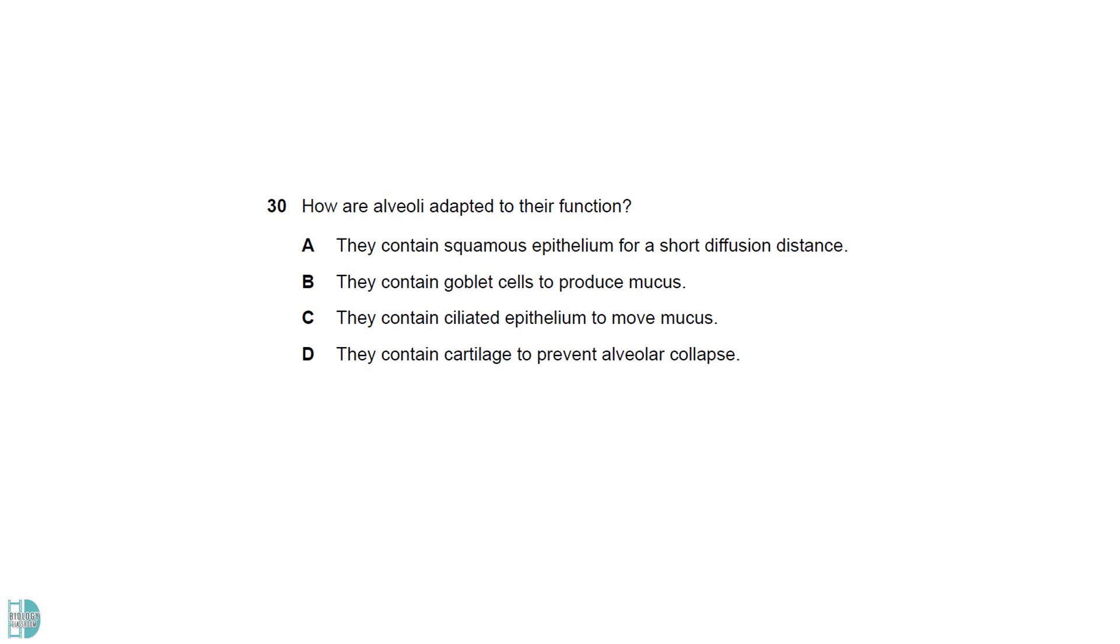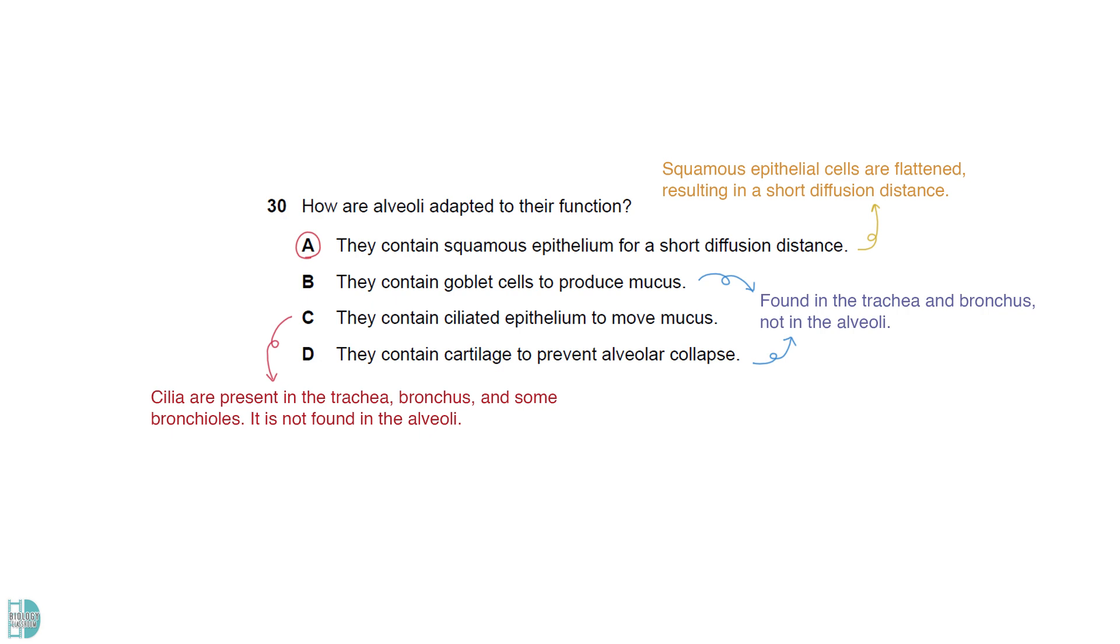A is the answer. Squamous epithelial cells are flattened, resulting in a short diffusion distance. B and D are wrong as goblet cells and cartilage are found in the trachea and bronchus, not in the alveoli. Cilia are present in the trachea, bronchus and bronchioles. It is not found in the alveoli.